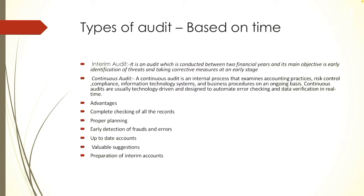A continuous audit involves a detailed examination of all transactions by the auditor attending at regular intervals — which may be weekly, fortnightly, or monthly — during the whole period of trading. There are some advantages and some disadvantages of conducting this continuous audit, which we will understand one by one. The first advantage is complete checking of all the records, as continuous auditing is conducted on a regular interval basis.